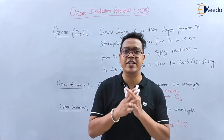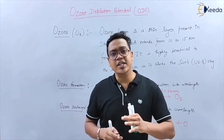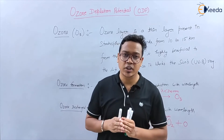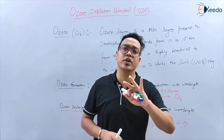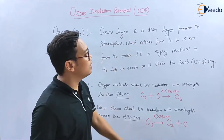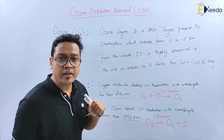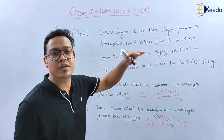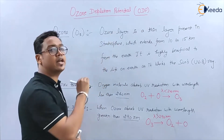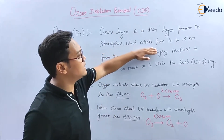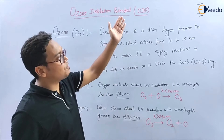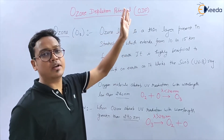Before studying the Ozone Depletion Potential, we will see what is ozone, how ozone is formed, and how ozone is destroyed. So what is ozone? Ozone layer is a thin layer present in the stratosphere. There is a troposphere, stratosphere, mesosphere, and exosphere in the Earth's atmosphere. In the stratosphere, the ozone layer is present, which extends from 10 to 15 km from the Earth's surface.